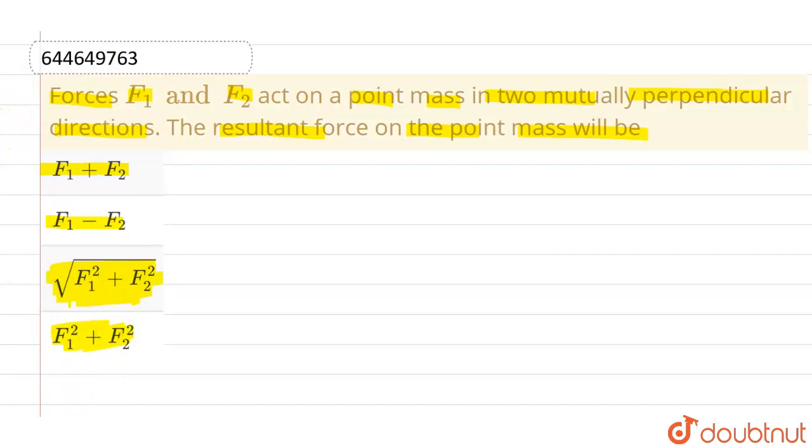Now, let us consider that this one is the force F1 and this one is the second force which is F2 vector. So this is F1 vector and this one is F2 vector. Now, we also know that magnitude of F1 vector this can be written as F1 only and magnitude of F2 vector this can be written as F2 only.